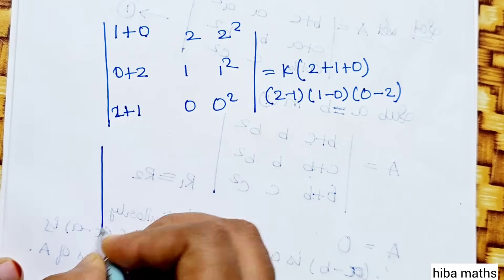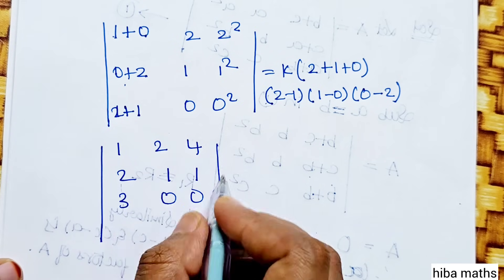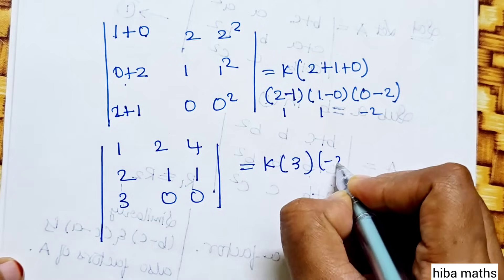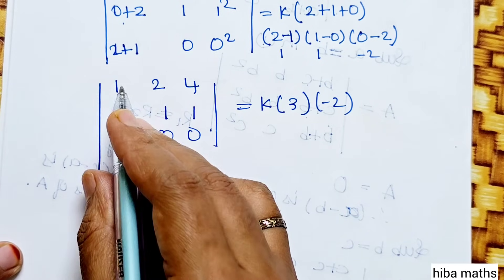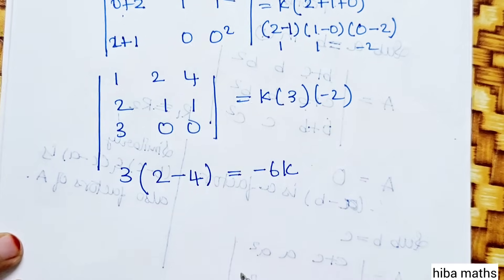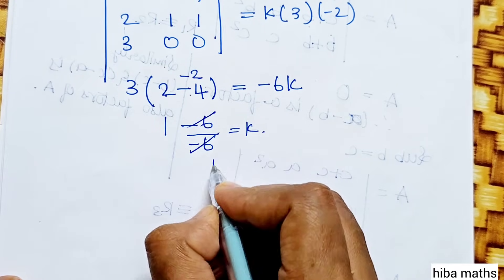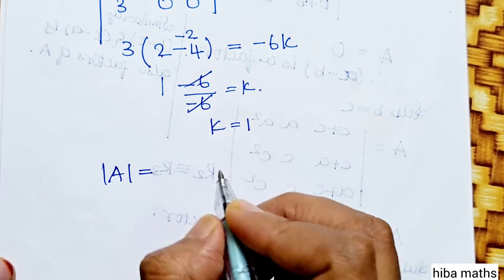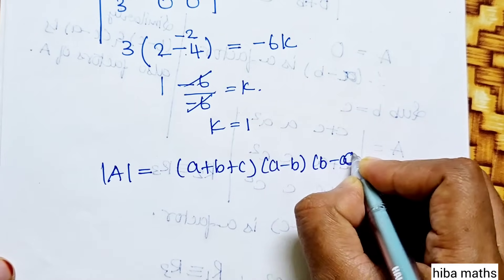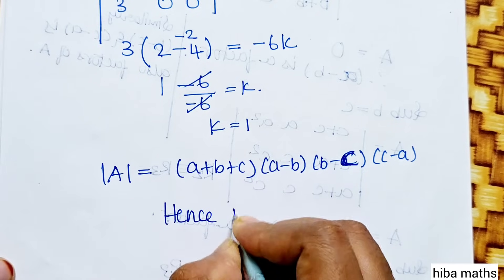Therefore k equals 1, and the determinant of A equals 1 times a·b·c times a minus b times b minus c times c minus a. This proves the given identity. The determinant equals a·b·c times a minus b times b minus c times c minus a, which completes the proof.